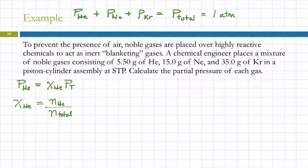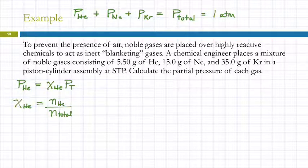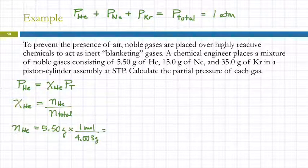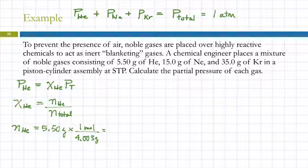This is one of those problems where you can't just plug numbers into an equation — you have to do work. Let's calculate the total moles: 1.3739 + 0.74331 + 0.41766 = 2.53487 total moles of gas.